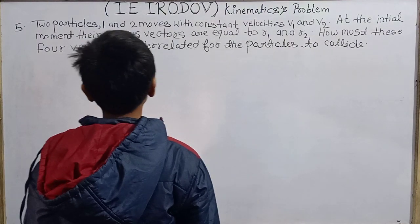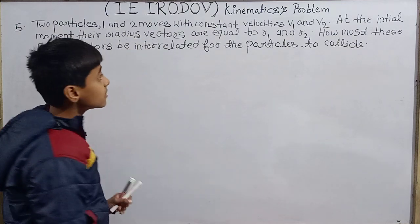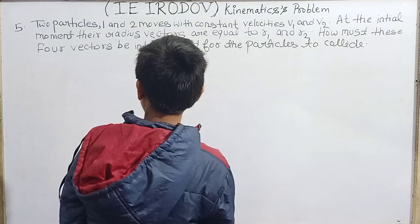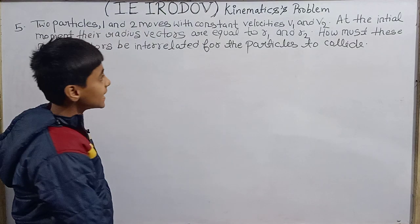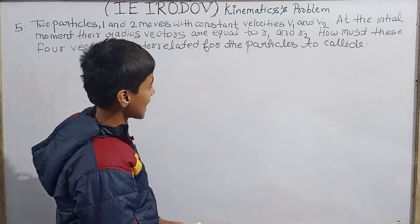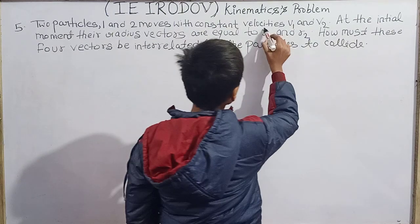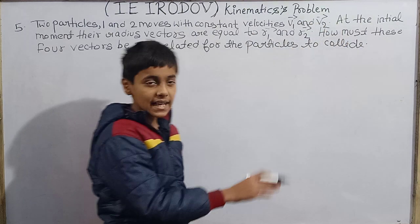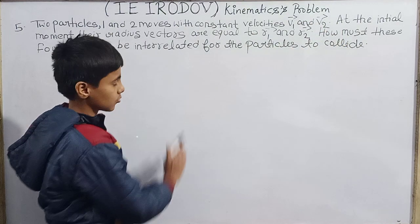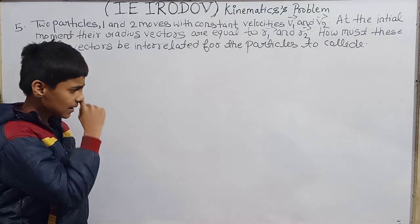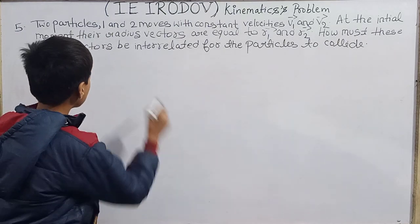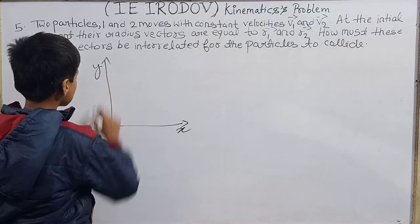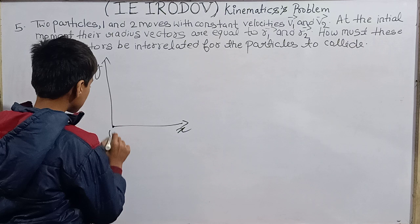Question 5: Two particles, 1 and 2, move with constant velocities v₁ and v₂. At the initial moment, their position vectors are r₁ and r₂ respectively — these are vector quantities. How must these four vectors be interrelated for the particles to collide? Let's set up a coordinate system to analyze this.